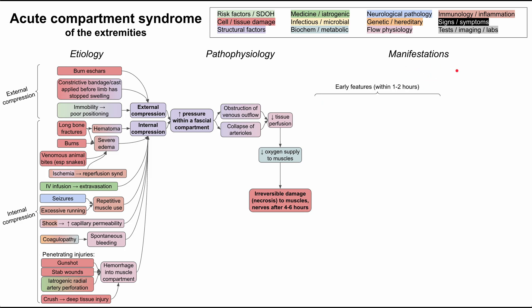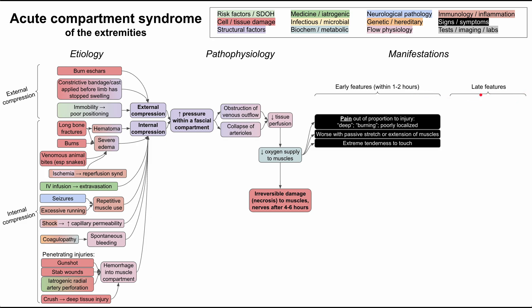Now let's discuss the manifestations of acute compartment syndrome. These break down into early features — within one to two hours of onset — and late features — around four or more hours. Early features: pain is likely the most prominent symptom, usually out of proportion to the injury. Patients describe it as deep or burning pain and often have trouble localizing it, pointing to the entire limb. Pain is worse with passive stretch or extension of the muscle, and the limb is extremely tender to touch on physical exam.